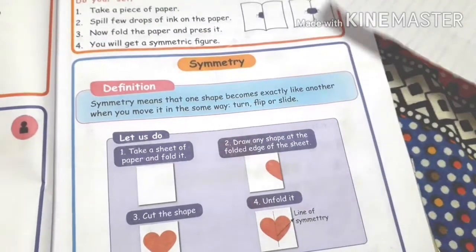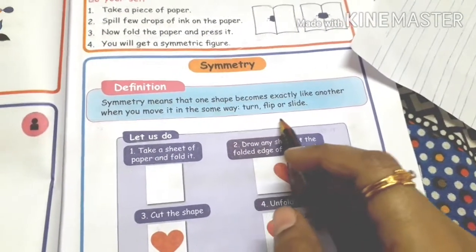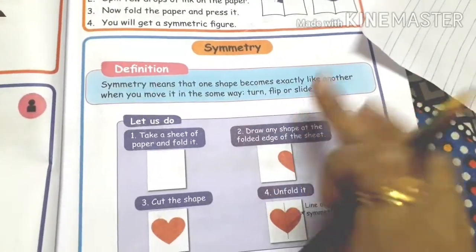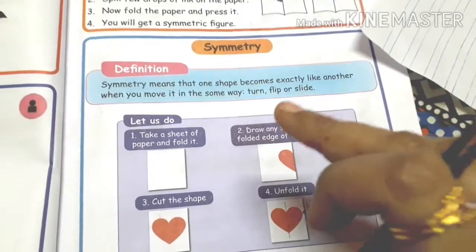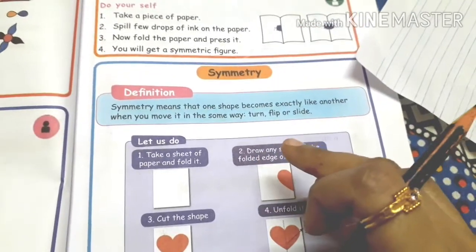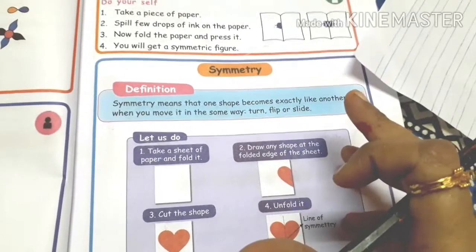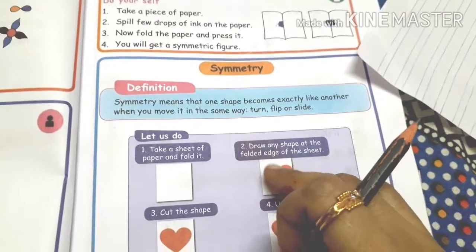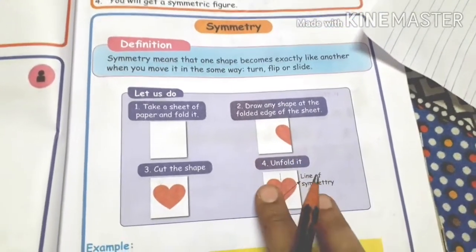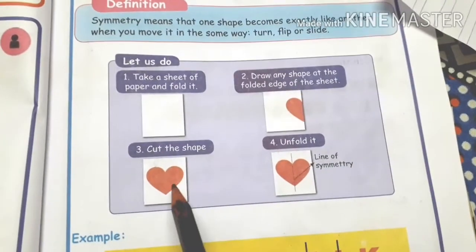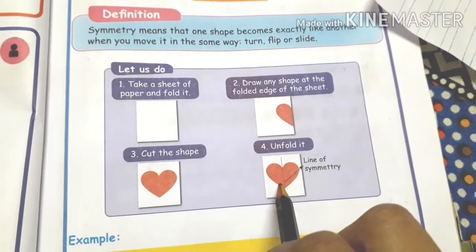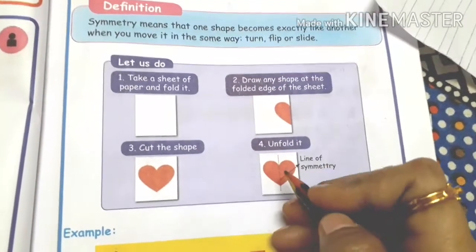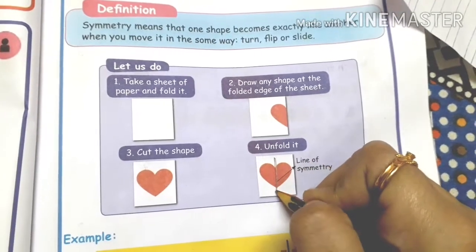So if you turn or flip or slide a shape, what do you get? For example, we have a butterfly. A butterfly's left and right sides are equal — that makes it a symmetric figure. A heart is also a symmetry shape, and this center line is the symmetry line.